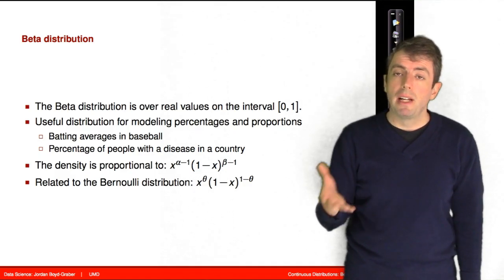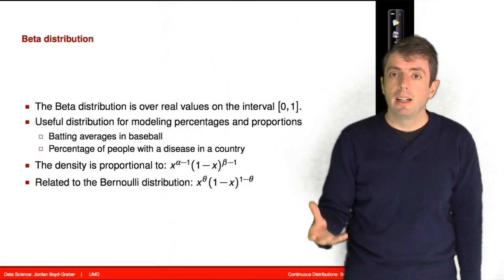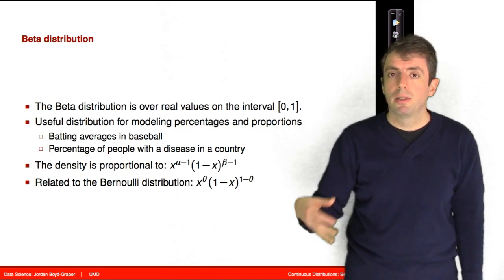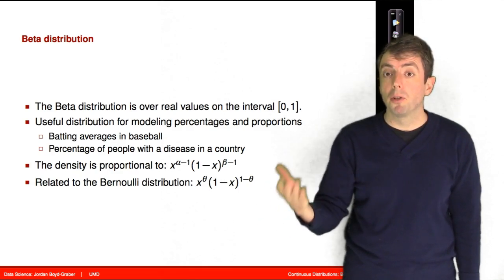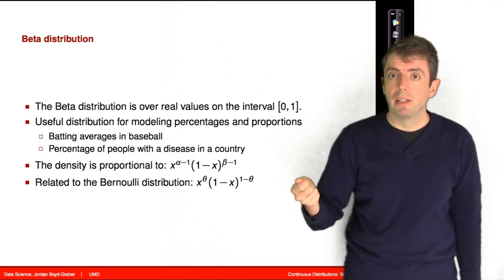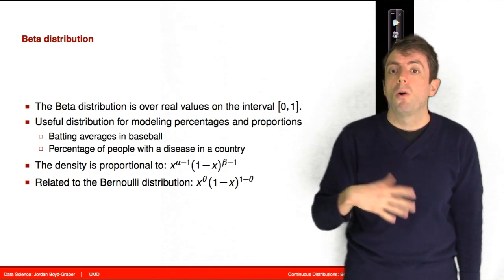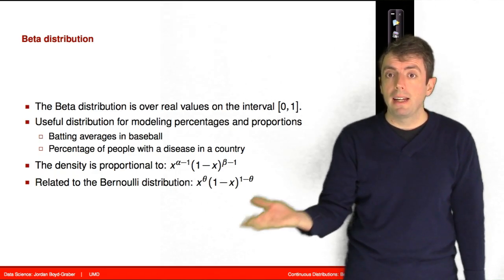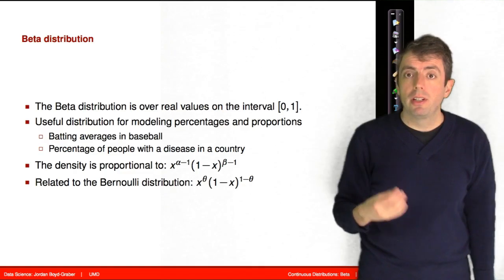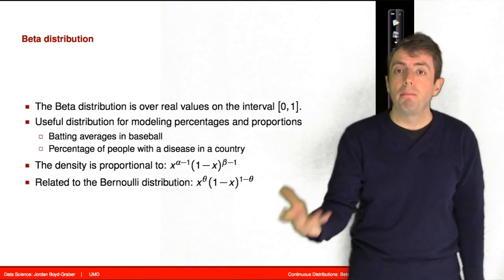This allows the beta distribution to model anything that looks like a probability. So this could be the proportion of people in a country with a disease, the probability of an unfair coin, or a batting average. The beta distribution has two parameters, alpha and beta.